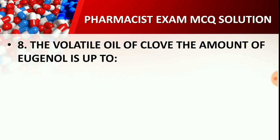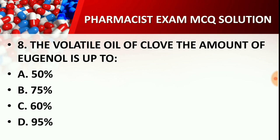Question number 8: The volatile oil of clove — the amount of eugenol present — is up to what percentage? Options: 50%, 75%, 60%, or 95%. The question asks what percentage of eugenol is present in clove volatile oil. The correct answer is Option C — up to 95%. Eugenol is the chief active chemical constituent of clove volatile oil, present up to 95%, and its main effect is as a dental analgesic.